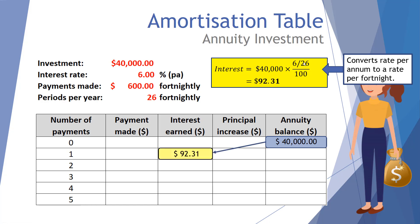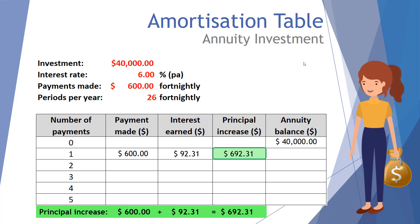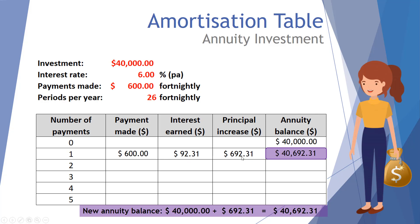That returns an interest of $92.31. We then make our payment of $600. With an investment annuity, the interest of $92.31 earned after the first fortnight plus the $600 payment both contribute to the principal increase. Adding those together gives a principal increase of $692.31. Starting from $40,000, after the first fortnight our annuity balance becomes $40,692.31.